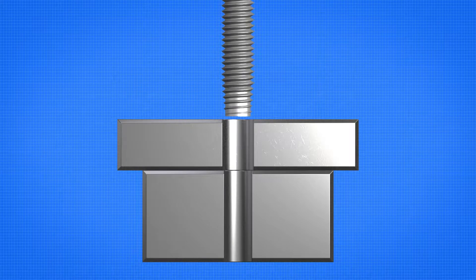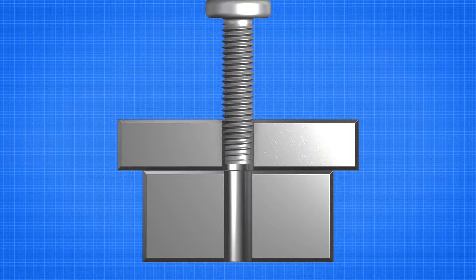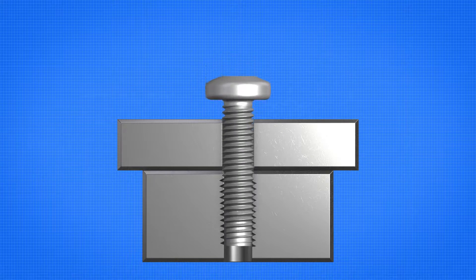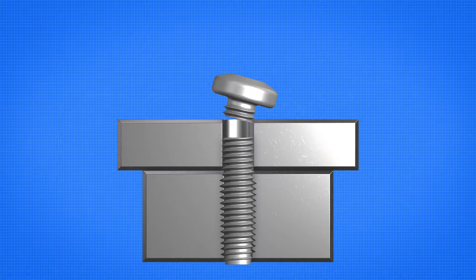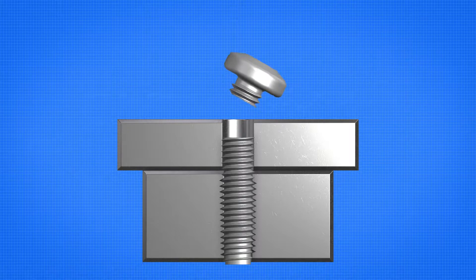Fastener fracture is the preferred failure mode in standard joints. If a Taptide Pro Fastener were inadvertently over-tightened, the mode of failure would be fastener fracture. The broken fastener could be easily removed, preserving the fastening site.